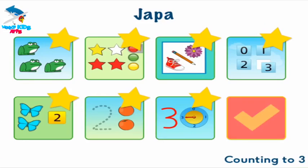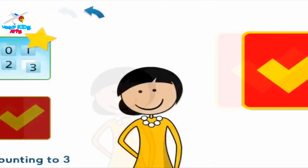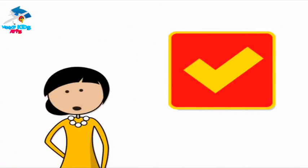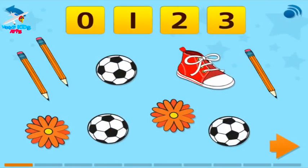Choose the flashing button. Now for a quiz. It has ten questions. If you get them all right, you will get a certificate. How many footballs are there? Touch the number, then touch the arrow.